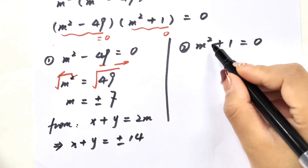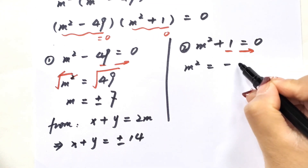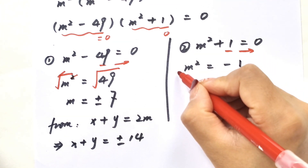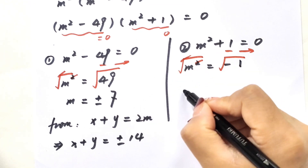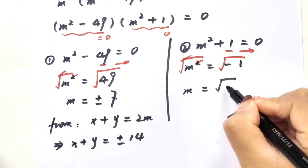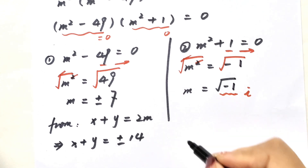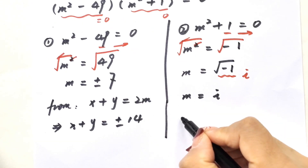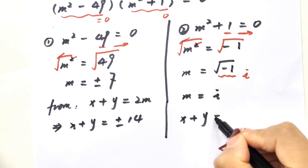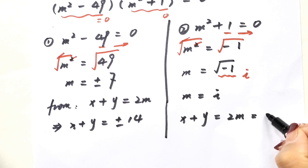Case 2: m squared plus 1 equals 0. Moving 1 to the right side gives m squared equals negative 1. Applying the square root gives m equals the square root of negative 1. We know the square root of negative 1 is i, so m equals i. Therefore x plus y equals 2m equals 2i.